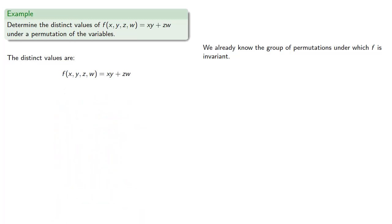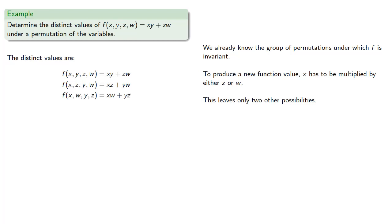Now, to produce a new function value, x has to be multiplied by either z or w. And this leaves only two other possibilities: f of x, z, y, w, that's xz plus yw, and f of x, w, y, z, that's xw plus yz.